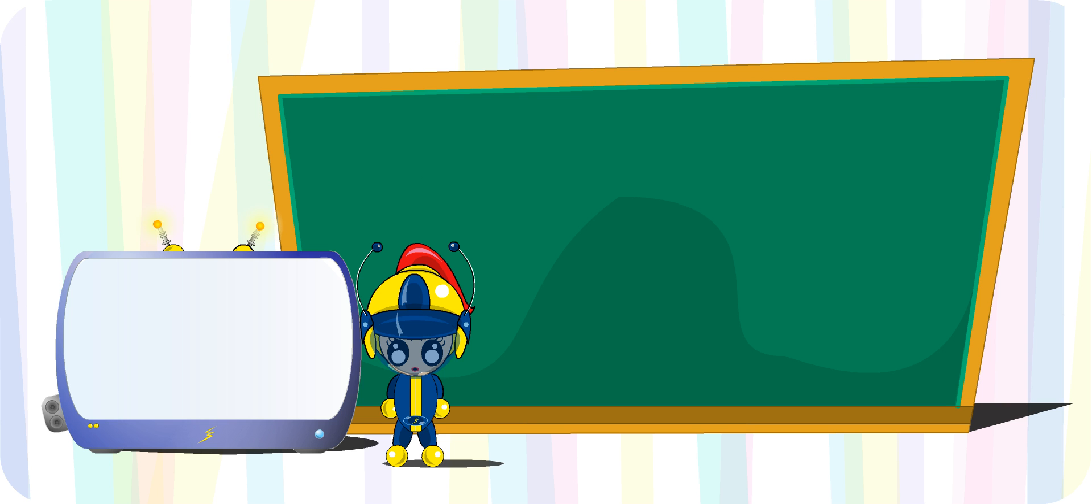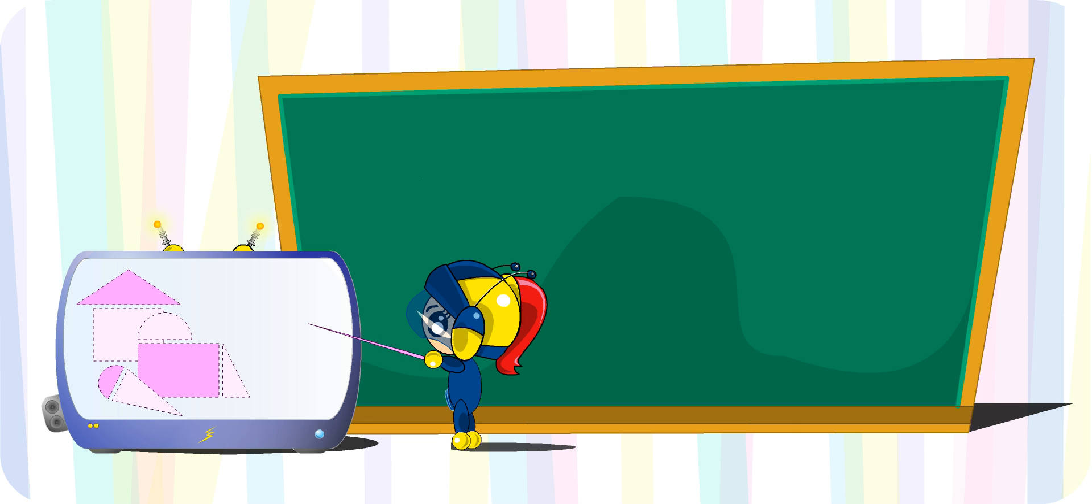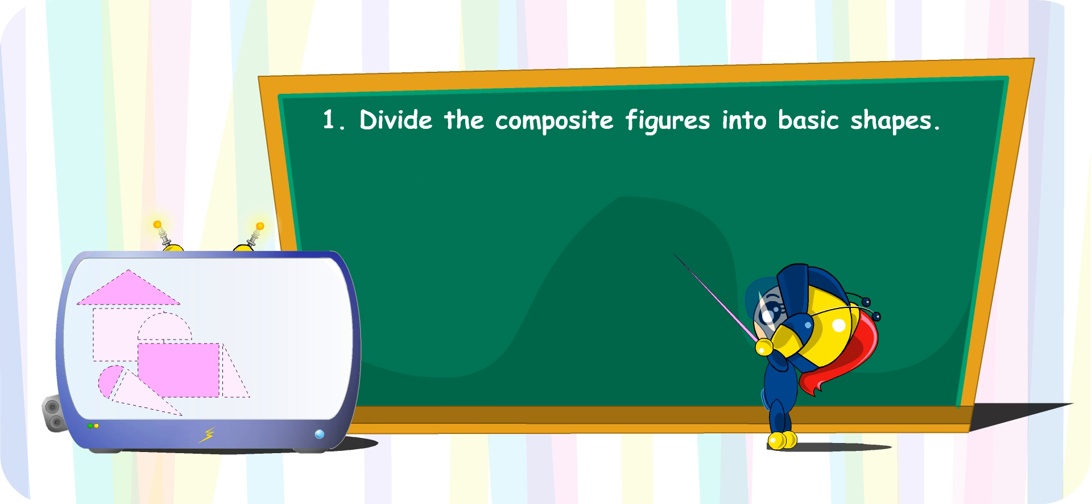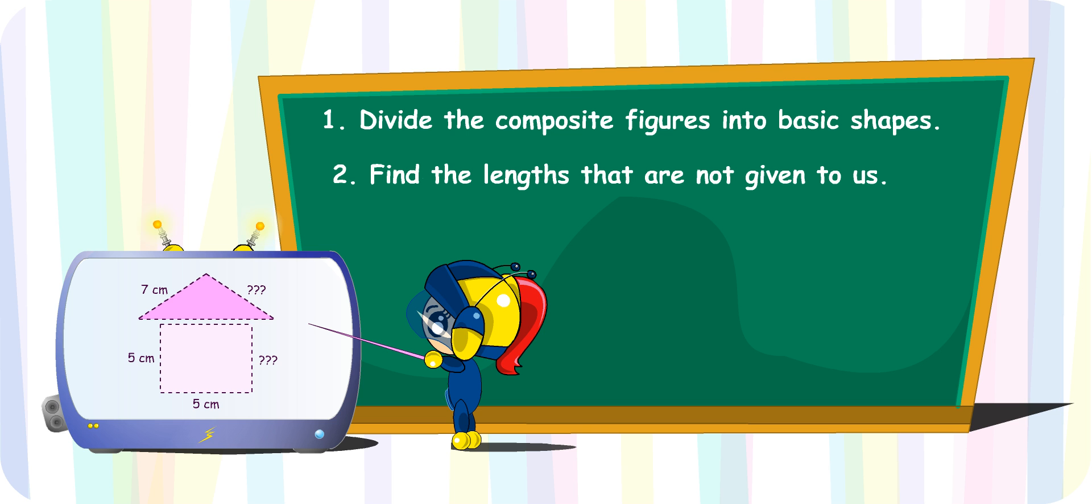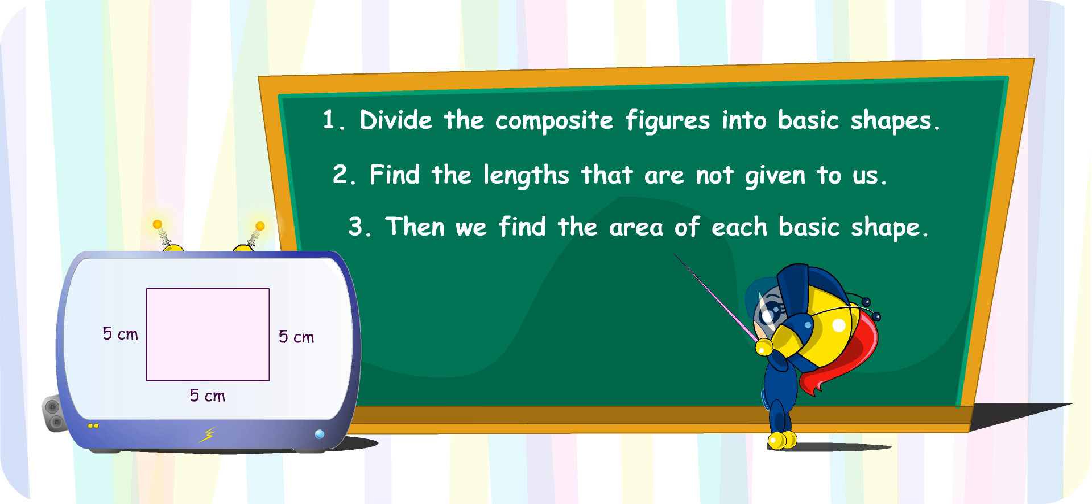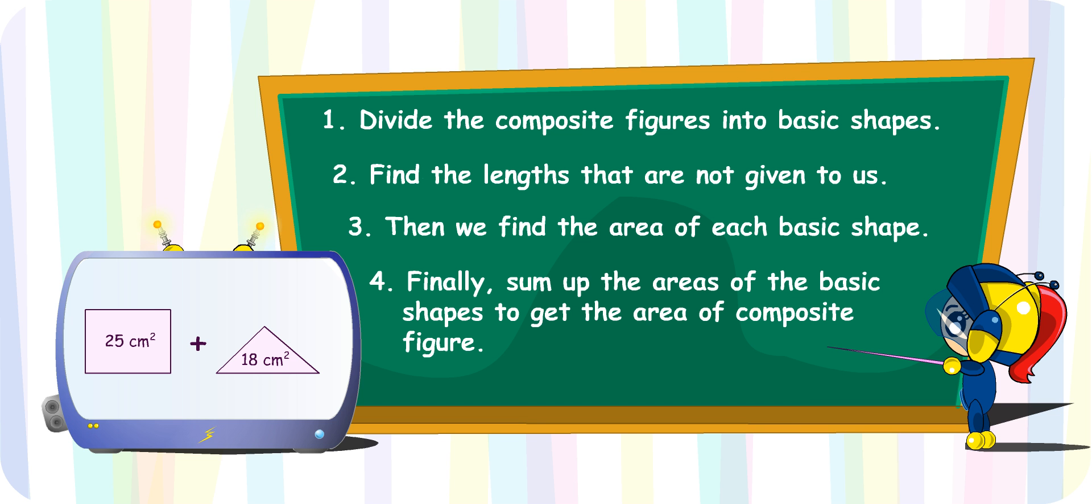Let's do a summary of the lesson. How do you find the area of composite figures, Turbo Girl? First, we divide the composite figures into basic shapes. Next, we find the lengths that are not given to us. Then, we find the area of each basic shape. Finally, the sum of the areas of the basic shape gives us the area of the composite figure.